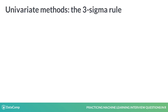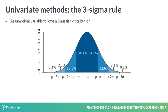If your variable is normally distributed, the three sigma rule can be applied. In this case, you can label any observation three standard deviations above or below the mean as an outlier, given that its probability will be less than 0.1%.